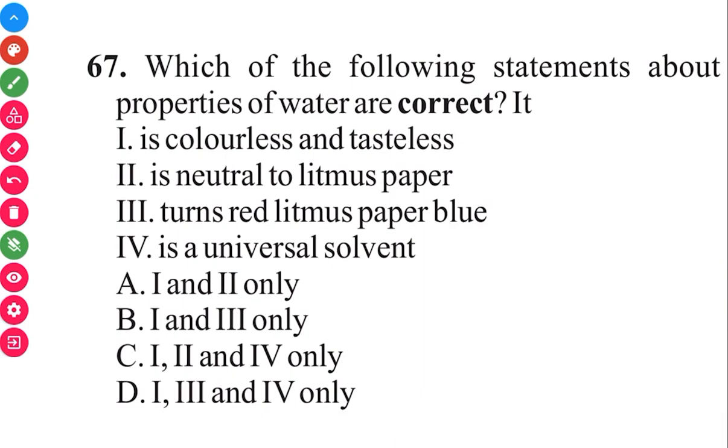Question 67. Which of the following statements about properties of water are correct? It is colorless and tasteless. It is neutral to litmus paper. It turns red litmus paper blue. It is a universal solvent. Okay, so A is I and II only. B is I and III only. C is I, II, and IV only. D is I, III, and IV only. In 3, 2, 1, these are the answers. I is correct. II is correct. IV is correct. So the answer is C. That's for 67.